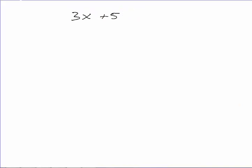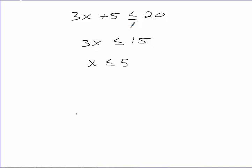So if I gave you something simple like this, how would you solve this? You get 3x — do I have to flip the inequality sign? No, because I'm not multiplying or dividing by a negative. So x is less than or equal to 5. And then how would you graph it? Closed circle, and then shade to the left.